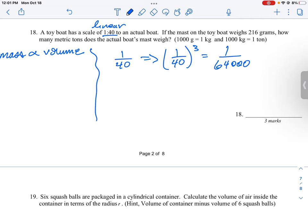1 to 64,000. So the 1 is the scale model and the 64,000 is the real boat. And then from that, we know the ratio here: the toy boat is going to be 216 grams. We're going to